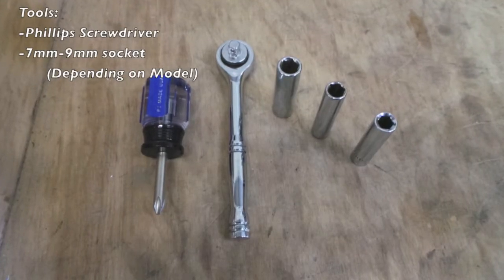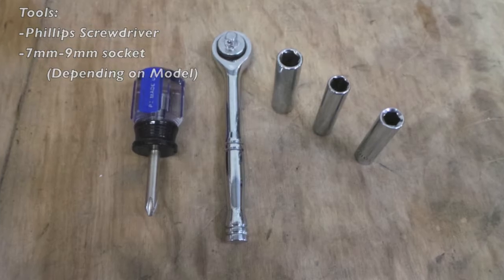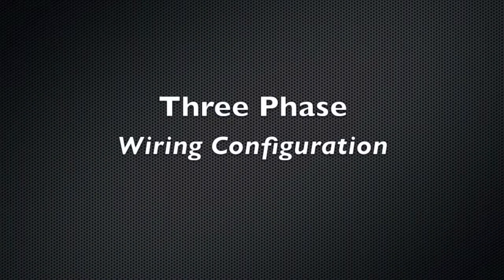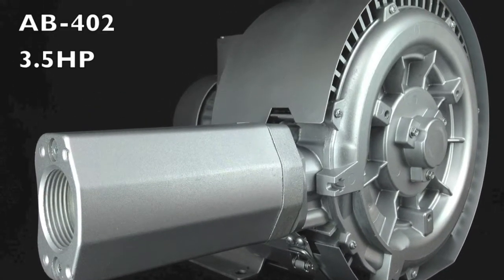You will need a Phillips head screwdriver and a seven to nine millimeter socket depending on the model. First we will go over three-phase wiring configurations using the AB402 3.5 horsepower blower.